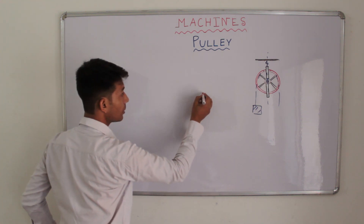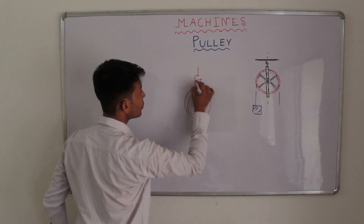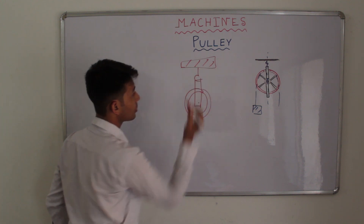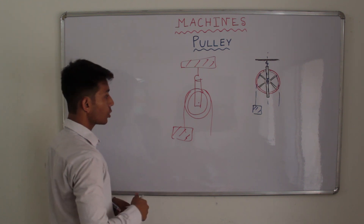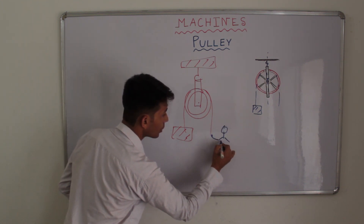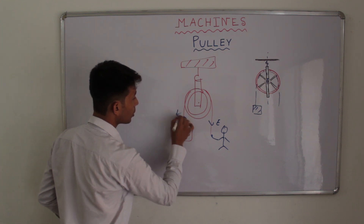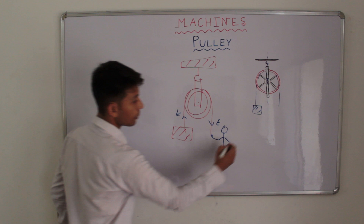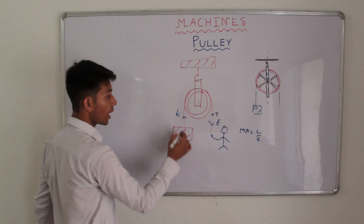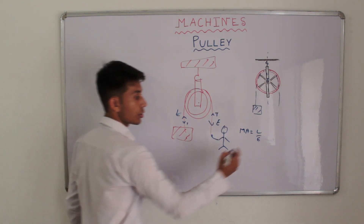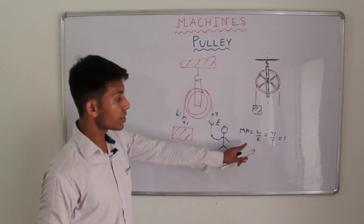Now if this axis is fixed at a point — like I am drawing a pulley — say this axis is fixed to a rigid support. The rope is tied over here and let the load be over here. So if the load is to be pulled by the effort, we see that mechanical advantage equals load by effort. Due to this effort there will be a tension in the string in the upward direction and due to this load there will be a tension in the downward direction. So mechanical advantage will equal T by T, that is equal to 1. So we find that there is no increase in mechanical advantage.